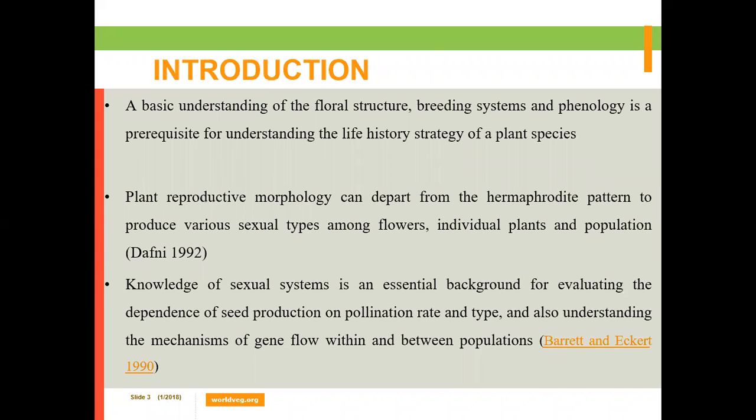A basic understanding of the flower structure, breeding system, and phenology is very important for understanding the life history strategy of a plant species. Plant reproductive morphology can depart from the hermaphrodite pattern to produce various sexual types among flowers, individual plants, and populations. Knowledge of the sexual system is an essential background for evaluating the dependence of seed production on pollination rates and understanding the mechanics of gene flow within and between populations.